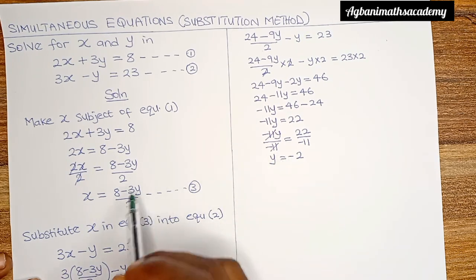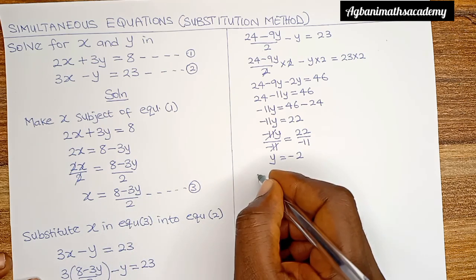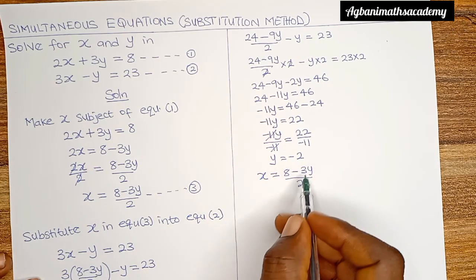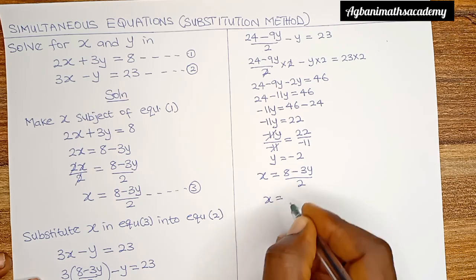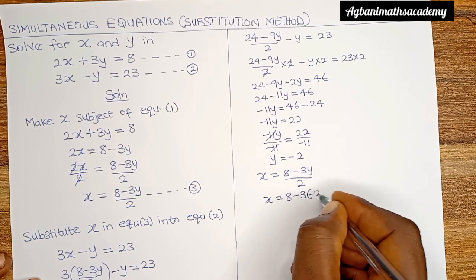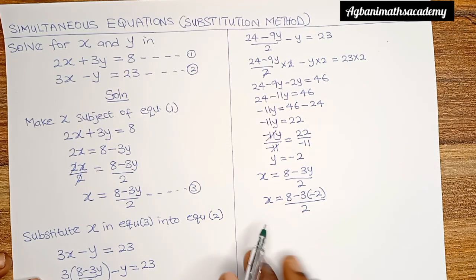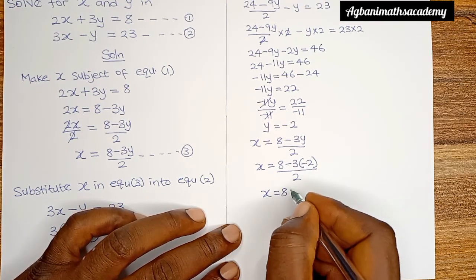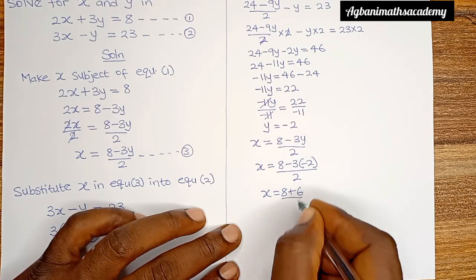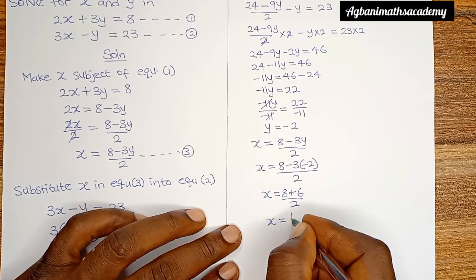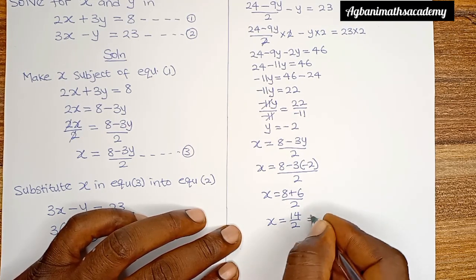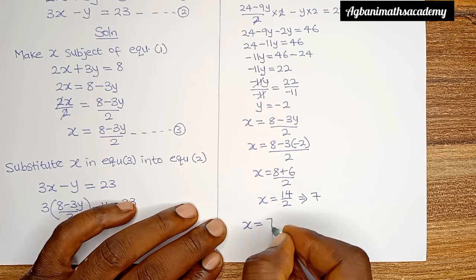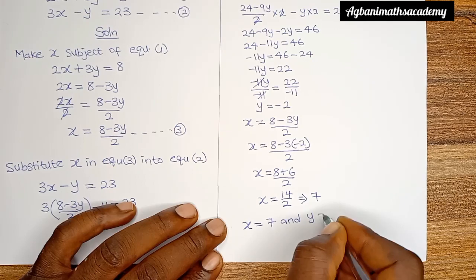The next thing we do is substitute this value of y into equation 3. We know that x is equal to 8 minus 3y all over 2. Where we have y, we put minus 2. So x is equal to 8 minus 3 times minus 2 all over 2. Minus multiplied by minus gives us plus. So x is equal to 8 plus 6 all over 2, which is 14 over 2, giving us 7. Our final answer is x is equal to 7 and y is equal to minus 2. This is the solution to the simultaneous equation.